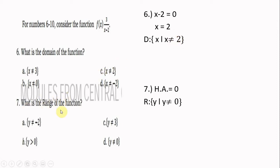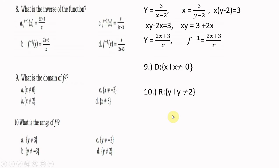What is the range of the function? Since the degree of the numerator is one less than the degree of the denominator — the numerator has degree zero and the denominator has degree one — the horizontal asymptote is zero, or the x-axis. Therefore, the range is the set of y such that y is not equal to zero.